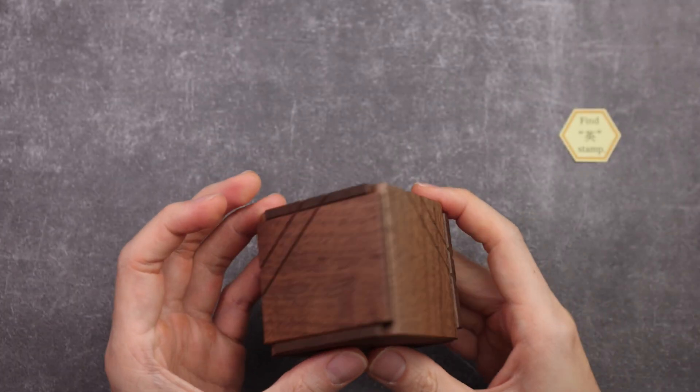Once this bit is pulled out, the opposite panel becomes free and can be slid open. And the Ying stem is found.